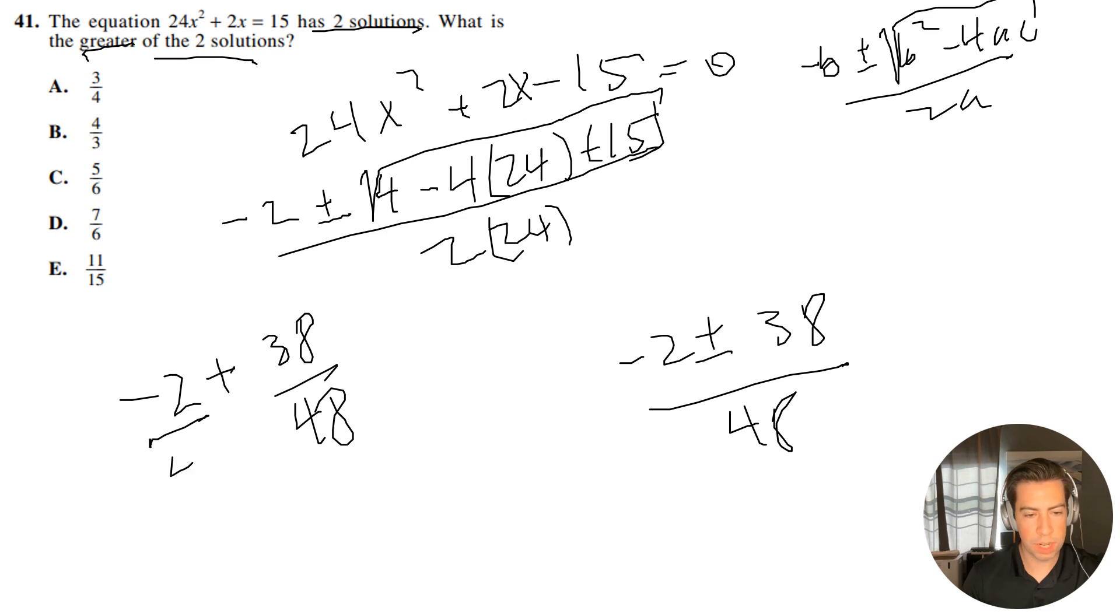So I'm going to do -2 + 38 over 48. And again, this is also divided by 48, don't forget that. So now what I'm going to get is 36 over 48.